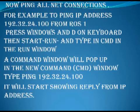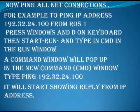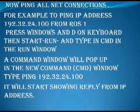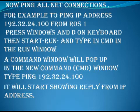Now ping all NET connections. For example, to ping IP address 192.34.24.100 from ROS1, press the Windows button on the keyboard, then go to Start > Run and type cmd in the run window. A command window will pop up. In the new command window, type: ping 192.34.24.100 — it will start showing replies.